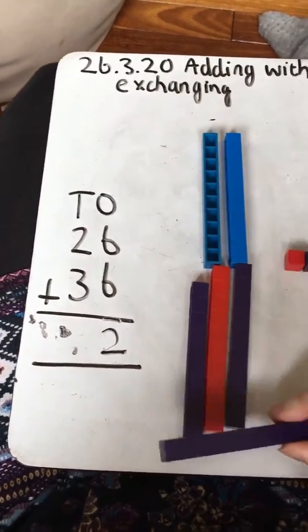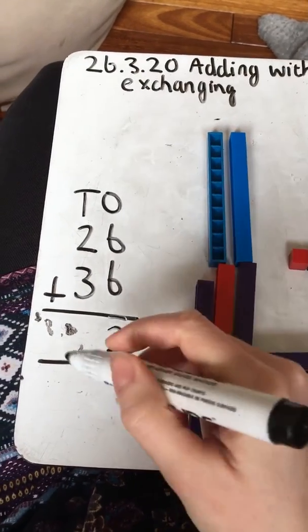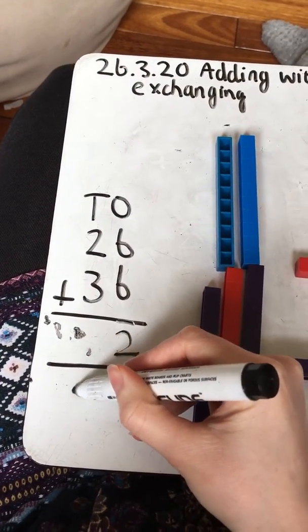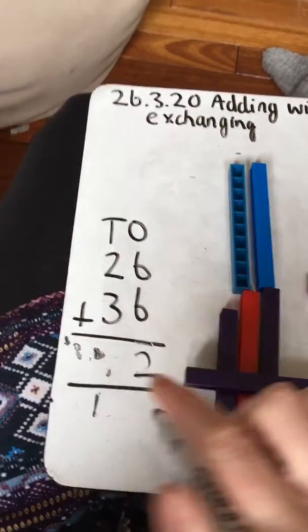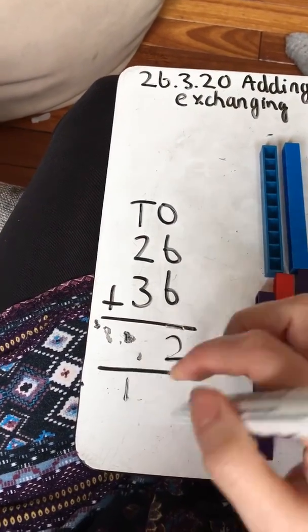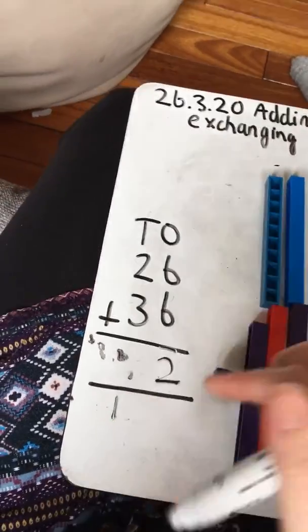And then my one ten that I've exchanged, I'm going to put at the bottom here. The important thing to remember when you're using the column method is that you don't forget this one here. You need to remember it.